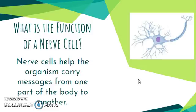A nerve cell's job is to send and receive information. They help an organism carry messages from one part of the body to another. For example, if you put your hand on a hot stove, the message travels up to your brain that says that's really hot, and it sends a message back down to your muscles to cause you to move your arm. Nerve cells carry messages throughout your body.